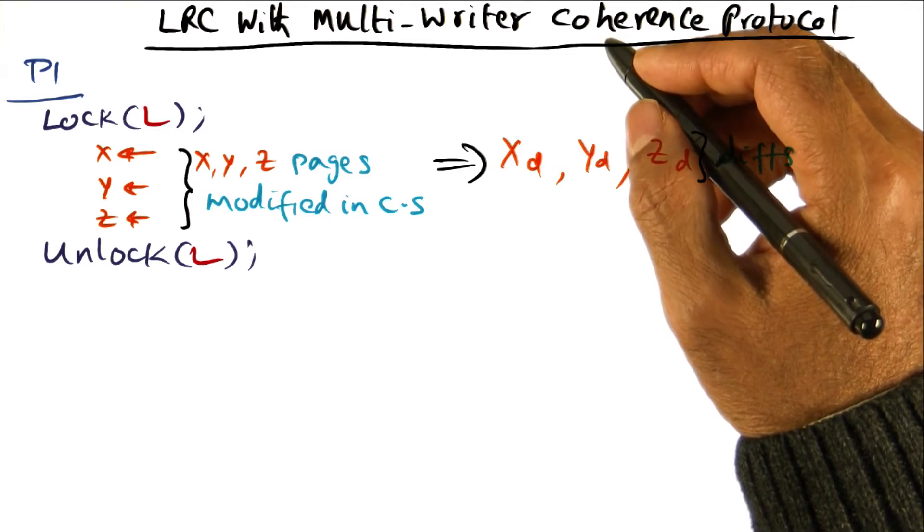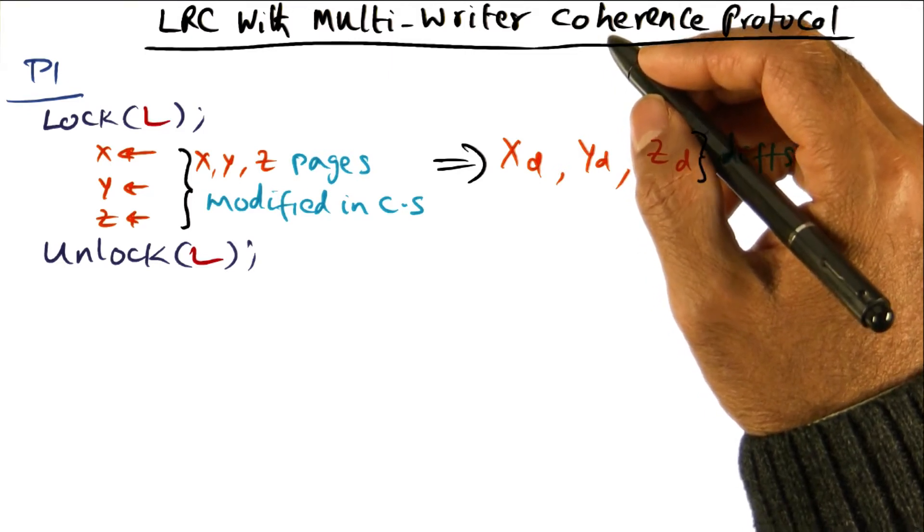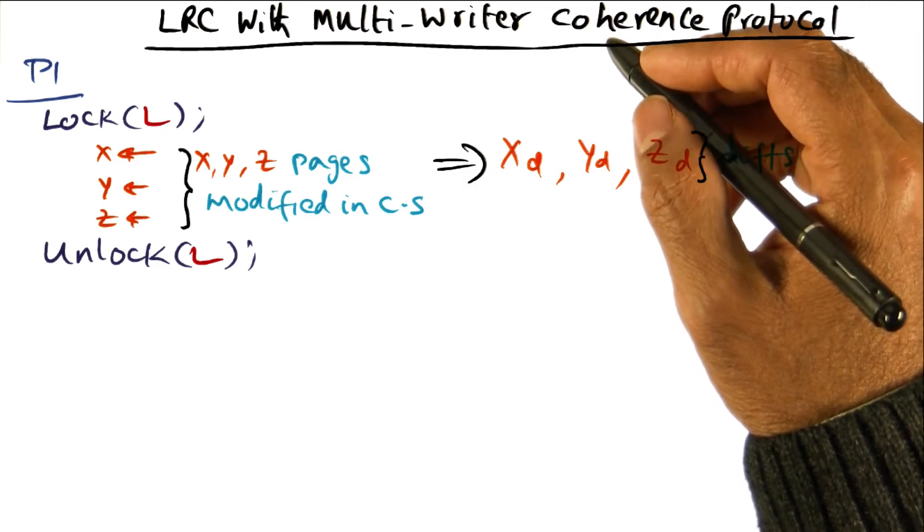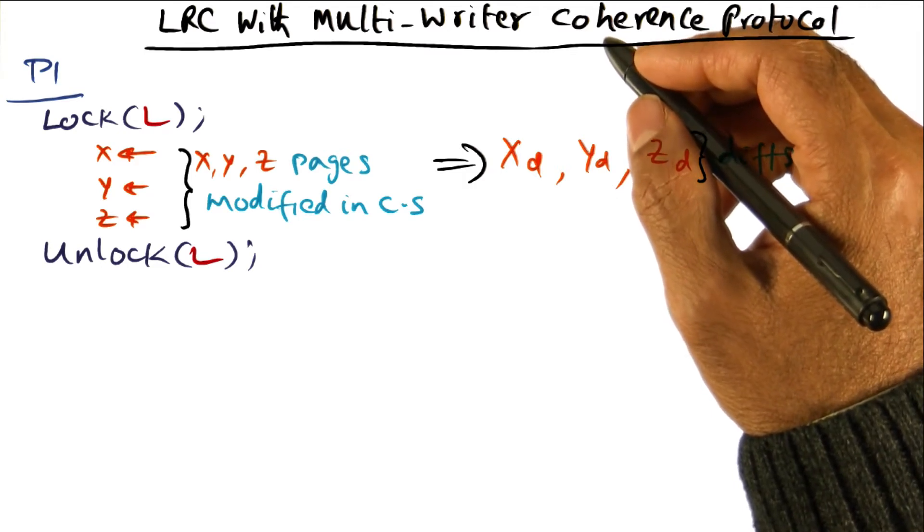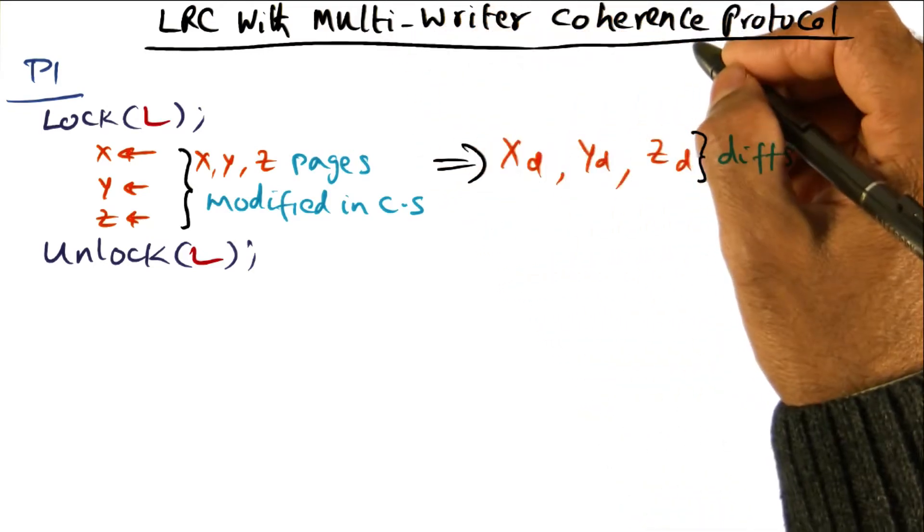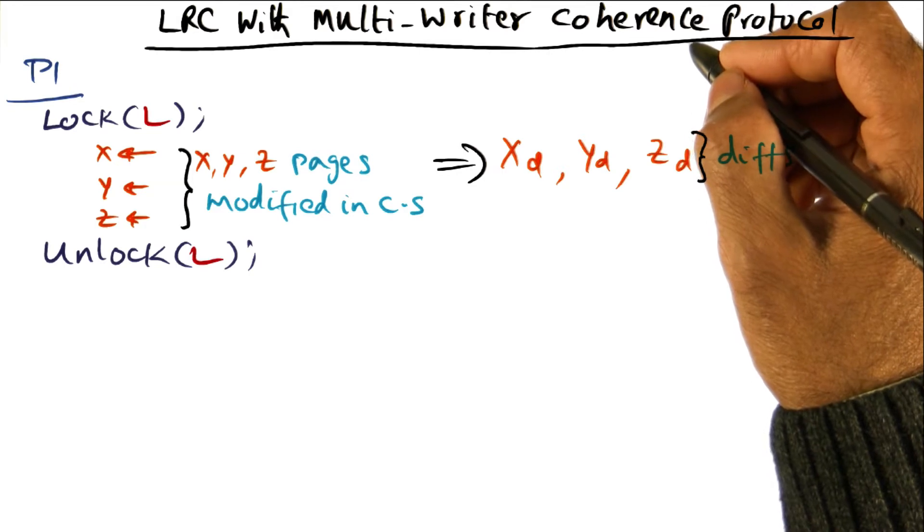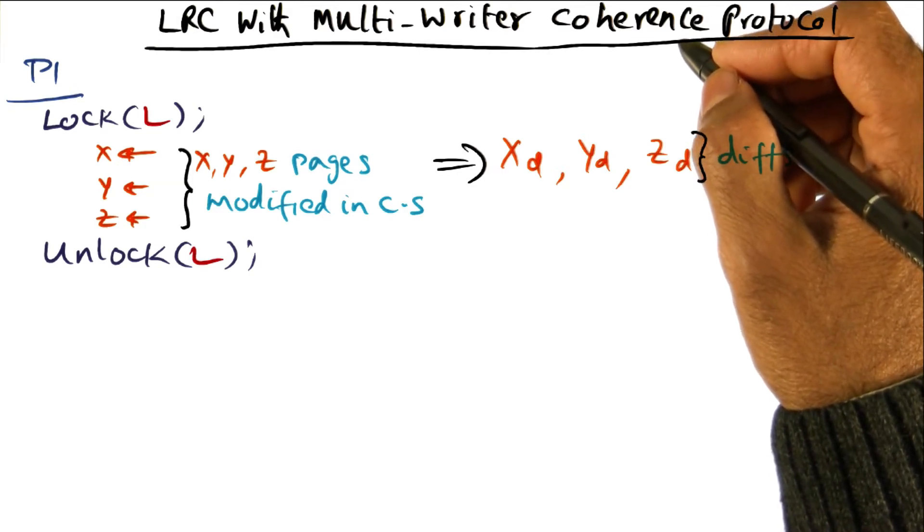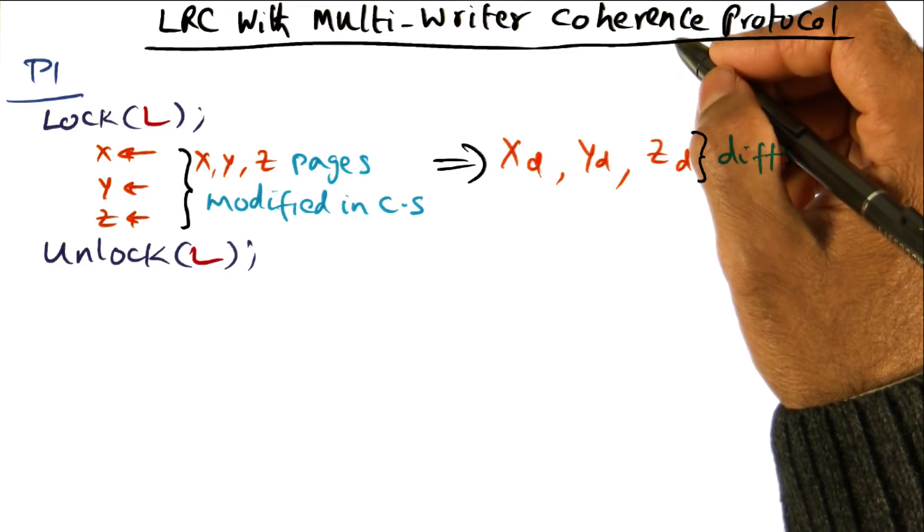Therefore, the DSM can be integrated with the operating system if the granularity of coherence maintenance is at the level of a page. But at the same time, we want to allow multiple writers to be able to write to the same page, recognizing that an application programmer may have packed lots of different data structures within the same page.